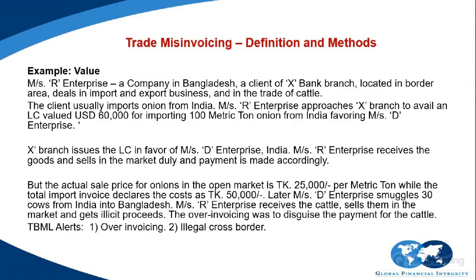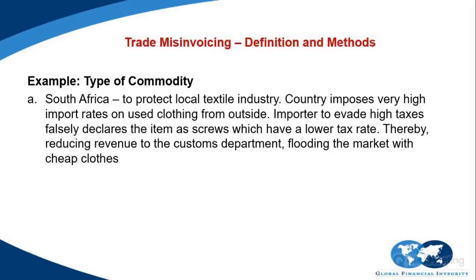In the second example on commodity type, many developing countries impose high import rates on used clothing to protect local textile industries. In order to avoid these high taxes, an importer will sometimes declare the item as widgets or something else treated with lower tariff rates. This reduces revenues to the customs department and, more problematically, floods the market with cheap clothes, further crippling the clothing industry. These two examples illustrate how trade misinvoicing can be used as a trade-based money laundering vehicle.